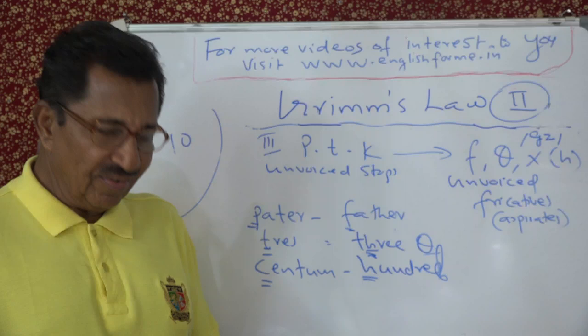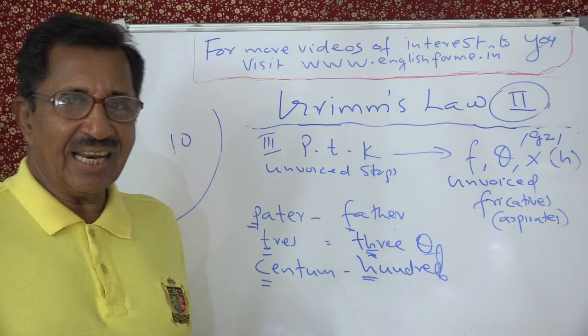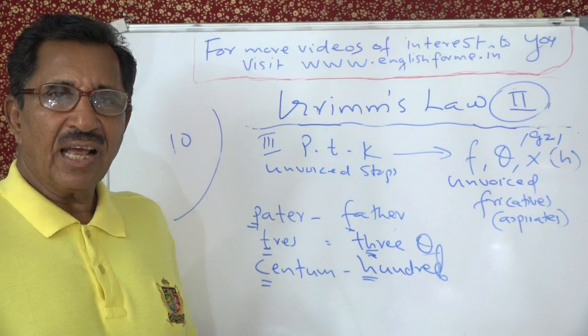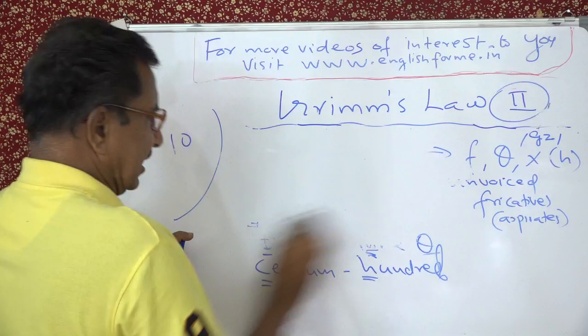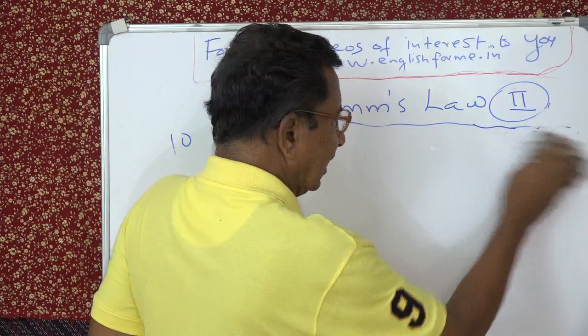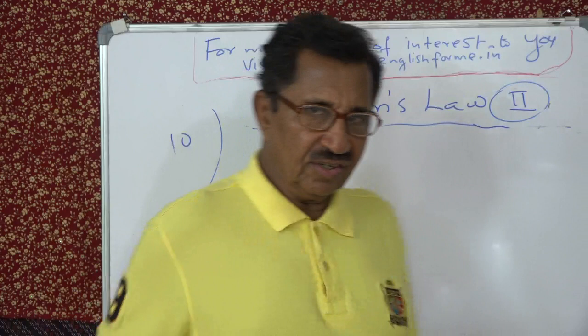With this we can conclude Grimm's Law. These are the nine correspondences: three laws, three statements, nine correspondences, very regularly illustrated with examples from non-Germanic languages — Latin and Sanskrit — and from the Germanic language, that is English. It's as simple as that.